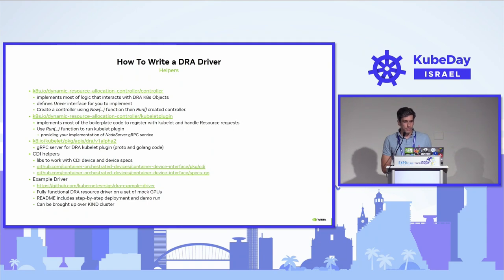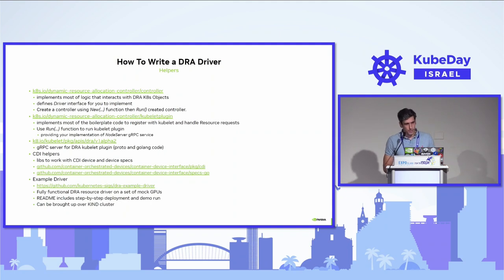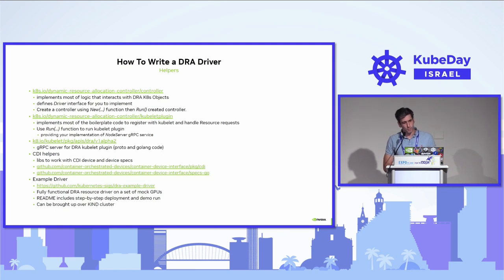For the Kubelet plugin part, registration with Kubelet via gRPC is already provided — you just implement the gRPC node server for allocating and deallocating resources, and call run. The gRPC API is defined in the Kubelet APIs in the Kubernetes project. There are also CDI helper packages to create CDI device specifications used by the container runtime. Most importantly, there is a DRA example driver — fully functional with mock GPUs — that runs on a kind cluster with step-by-step instructions. It serves as a reference implementation you can fork and extend.